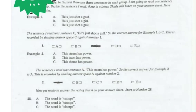Now get ready to answer the rest of test 4 on your answer sheet. Start at number 28. Number 28, the word is Crumps. Number 29, spell Rubber. Number 30, is a Ribbon.